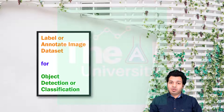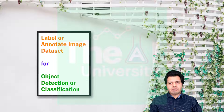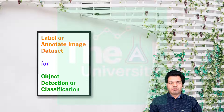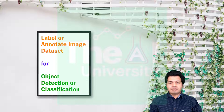Do you know that in order to build and train any object detection model or classification model, be it using a standalone convolutional neural network or using YOLO v4 framework, you need to have an image dataset that is labeled or annotated?